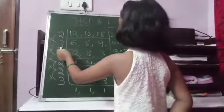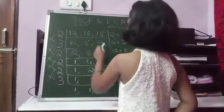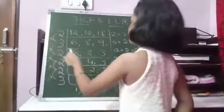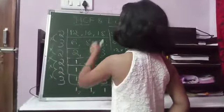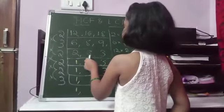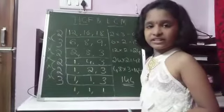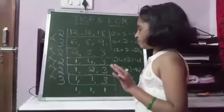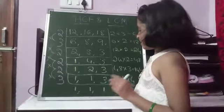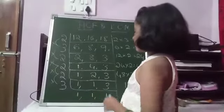So now let us write 3, because 6 and 9 are divisible by 3. So 3 2s are 6, 3 3s are 9. The number which is not divisible by a divisor, that comes down directly.